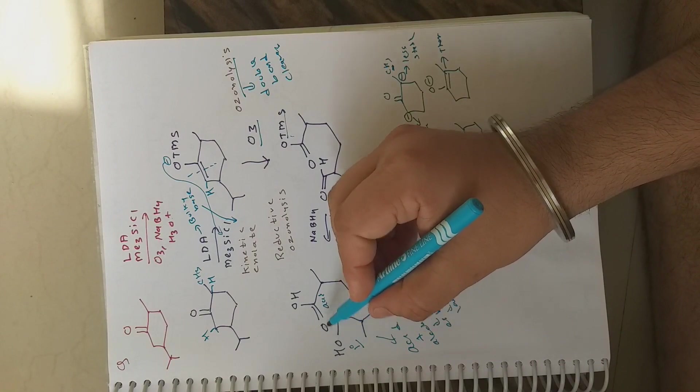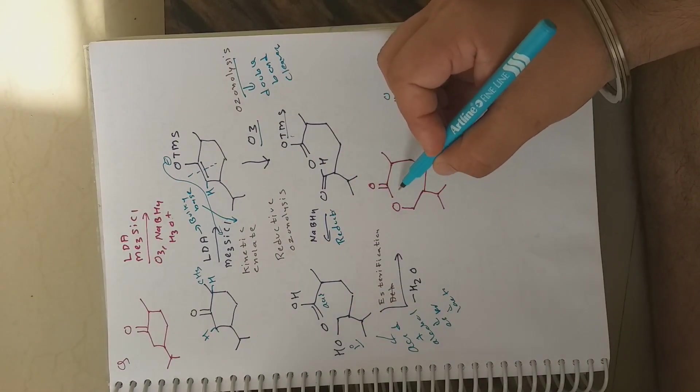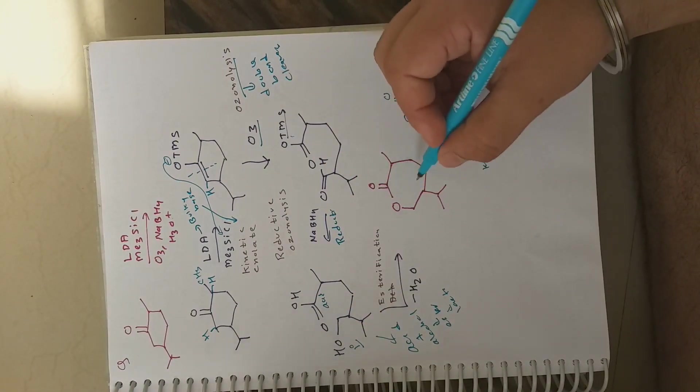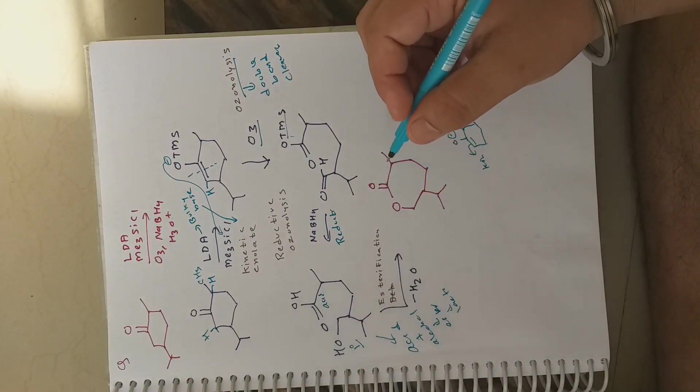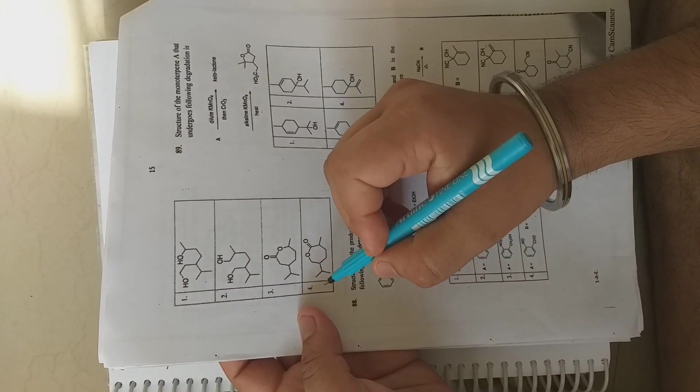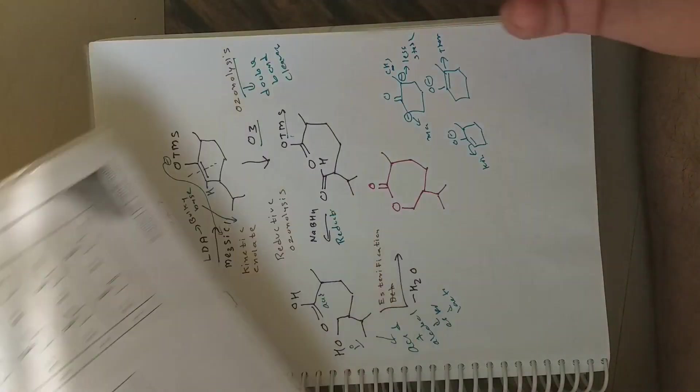The lactone is the only right option. We are left with only one option after this analysis. The kinetic enolate forms at that specific position, and this is confirmed by the final lactone product.